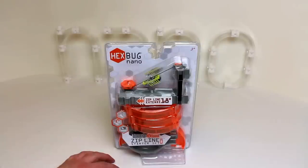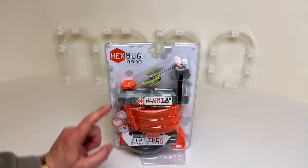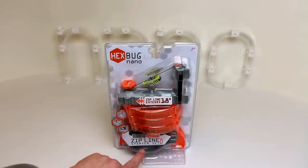Here we have the Hexbug Nano Zipline Starter Set. There's 23 pieces in here, including a spiral, a straight length, and a loop around.